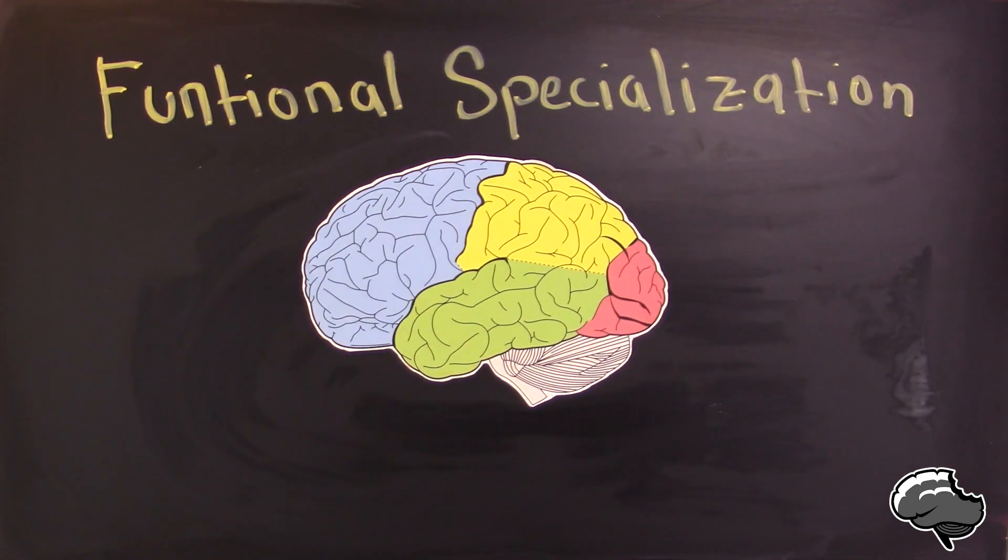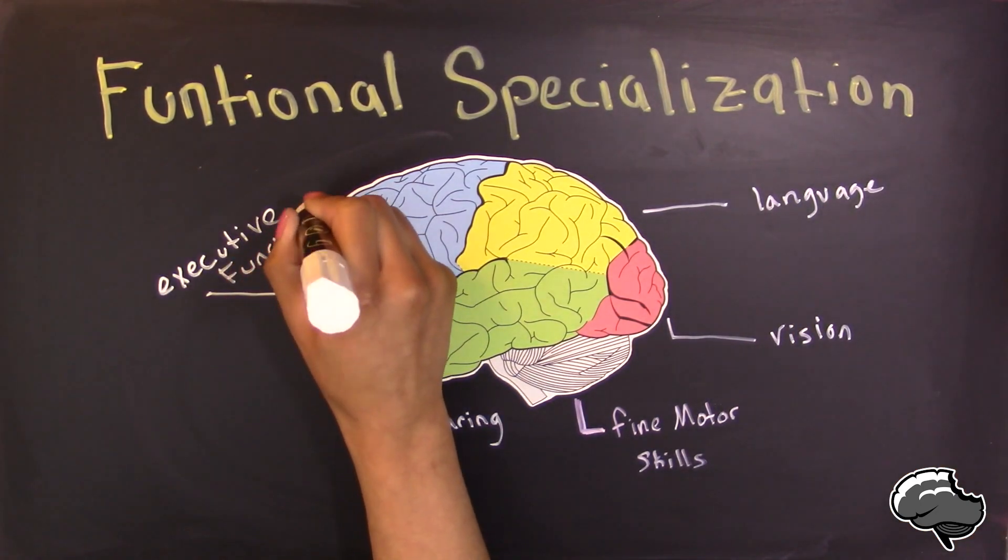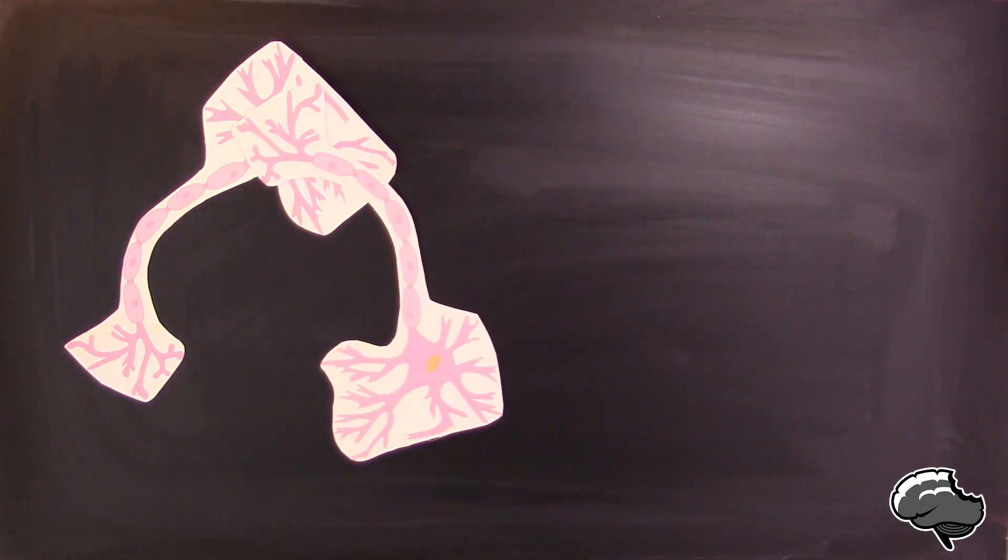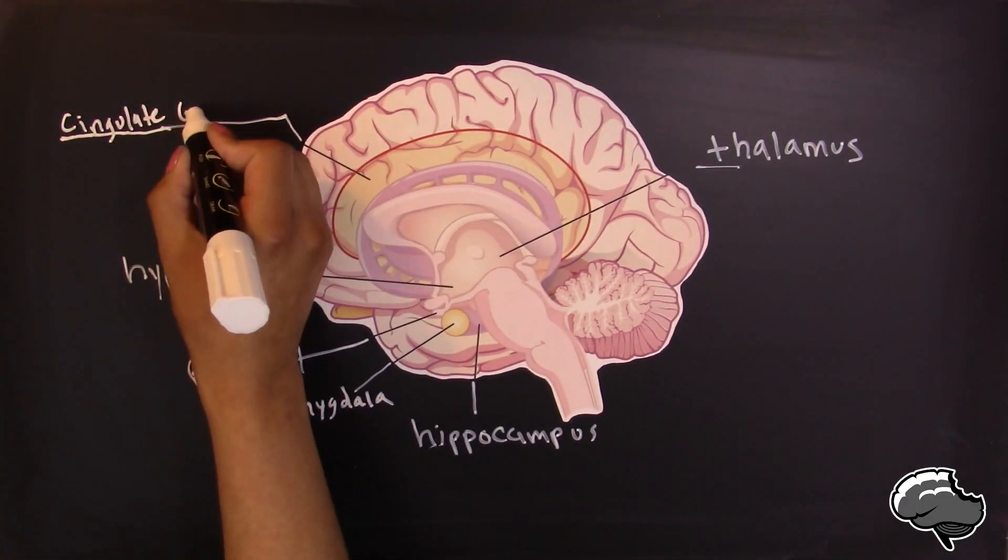The main areas include the cerebellum, occipital lobe, parietal lobe, temporal lobe, and frontal lobe. Clusters of neurons also create subcortical structures of the brain, such as the structures that comprise the limbic system.